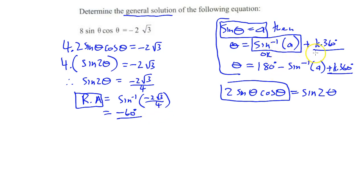So let's follow the formula. So 2 theta equals minus 60 plus k dot 360. Now let's solve for theta. How are we going to solve for theta? We're going to divide across by 2. So it will be minus 30 degrees plus k dot 180. So that's the first one done.